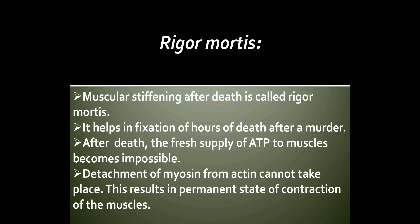Rigor mortis: Usually some hours after the death of an individual, its muscles become stiff. This muscular stiffening after death is called rigor mortis, and it helps in fixation of the hours of death after a murder. After death, fresh supply of ATP to muscles becomes impossible. Therefore, once the stored ATP is finished, detachment of myosin from actin cannot take place, resulting in a permanent state of contraction of the muscles, and the body becomes stiff.